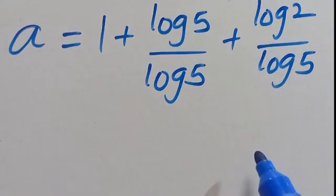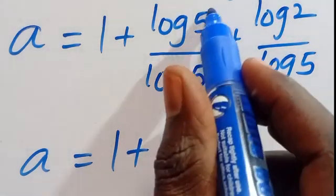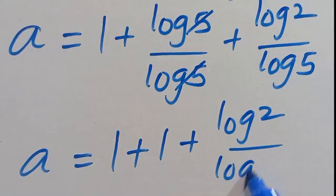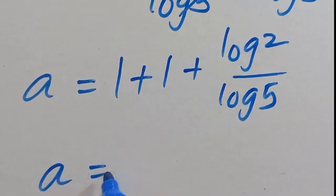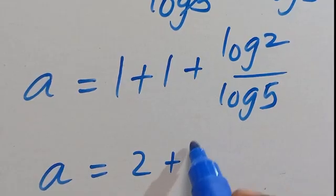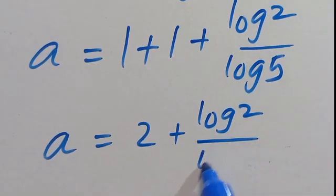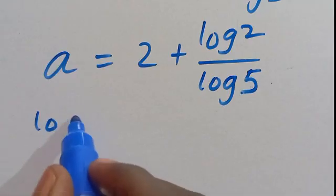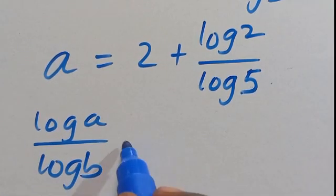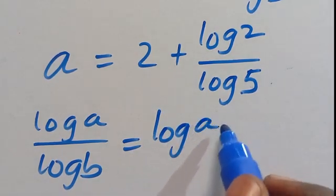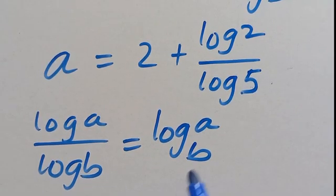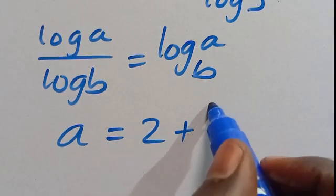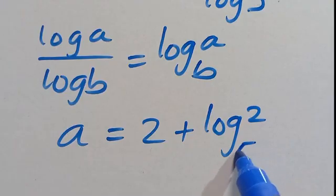So we have A equals 1 plus log 2 divided by log 5. Adding the 1 again from the earlier step gives A equals 1 plus 1, which is 2, plus log 2 divided by log 5. Now recall that log A divided by log B equals log A in base B. Applying it here, we can have A equals 2 plus log 2 in base 5.